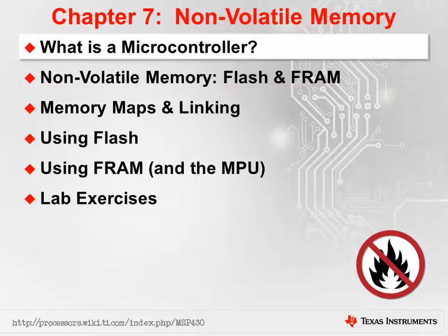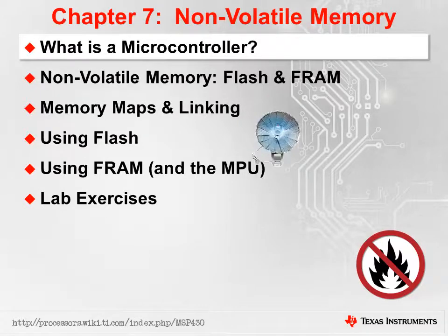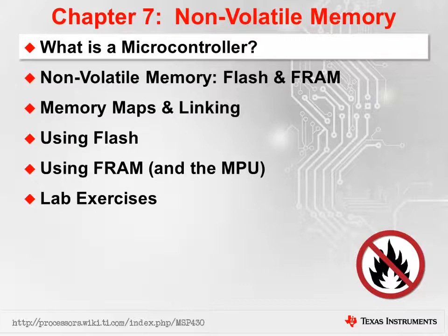The third item on our list is memory maps and linking. Since we're going to be using these memories in a slightly non-standard way — for example, putting persistent data into non-volatile memory — we're going to have to do something unique with the linker command file. The final two sections of the chapter look at using flash and using FRAM along with the MPU, exploring how each has been implemented on the MSP430, as well as the code and tools we can use to program them.